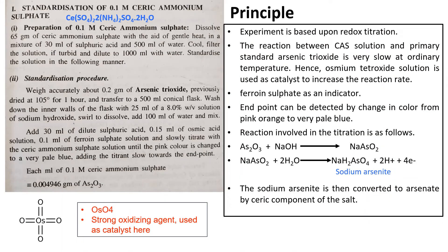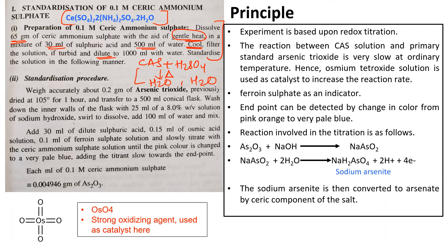Standardization of 0.1 molar ceric ammonium sulfate: you can see the molecular formula of ceric ammonium sulfate. To prepare it, dissolve 65 grams of ceric ammonium sulfate with gentle heat — heat is required for its dissolution — in a mixture of 30 ml of sulfuric acid and 500 ml of water. Let it cool down, filter the solution if turbid, and dilute to 1000 ml with water.